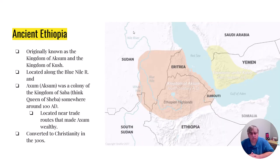Something I haven't really mentioned before is ancient Ethiopia. Ethiopia used to be known as the Kingdom of Aksum or the Kingdom of Cush. It's also along the Nile River, but the Blue Nile — where most of the water comes from for the Nile River, though the White Nile is longer. What's really interesting about Aksum is it used to be a colony of the Kingdom of Saba, better known as Sheba. The Queen of Sheba was actually a real person. And Ethiopia was one of the first places outside the Middle East to convert to Christianity, around the year 300.